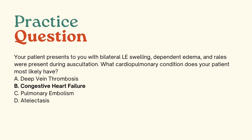The correct answer is B. Your patient presents with bilateral lower extremity swelling, dependent edema, and rales present during auscultation. What cardiopulmonary condition does your patient most likely have? A — deep vein thrombosis — is incorrect because DVT causes unilateral swelling in the affected limb. B — congestive heart failure — is correct, as it presents with cold hands and feet, dependent edema, increased fatigue, bilateral lower extremity swelling, and rales. Make charts to help you remember all the signs and symptoms of these different conditions.